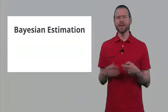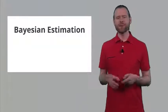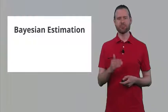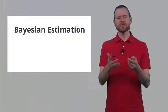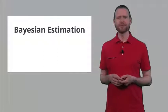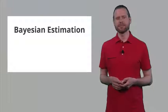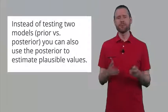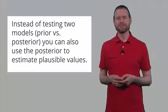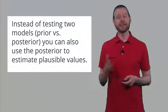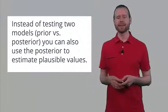We can also look at Bayesian statistics not from a hypothesis testing viewpoint, but from a Bayesian estimation perspective — we just want to estimate which values are most likely. This is not Bayesian hypothesis testing, but Bayesian estimation. We also use the posterior distribution to estimate. So instead of testing two different models, we will use the posterior to estimate plausible values: which values do you believe are most likely, based on your prior belief and the data you have observed?